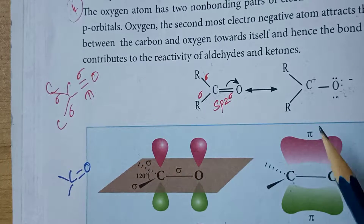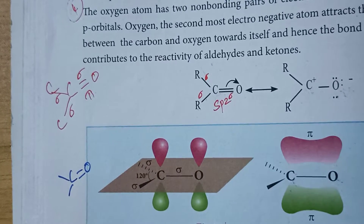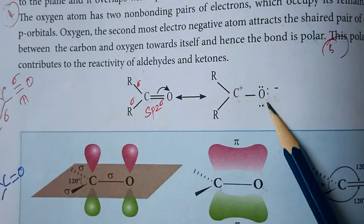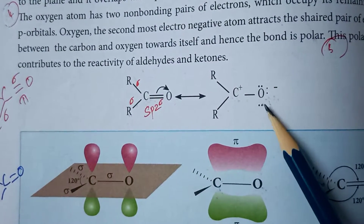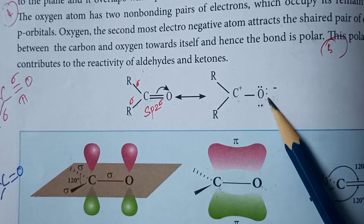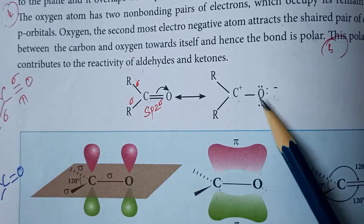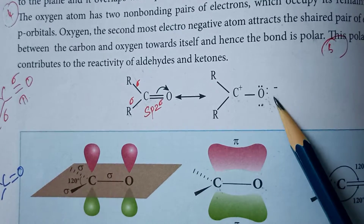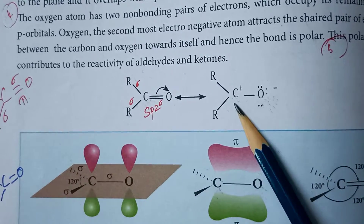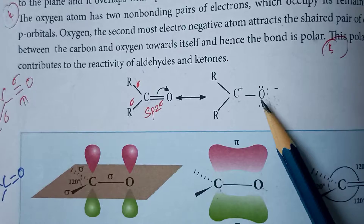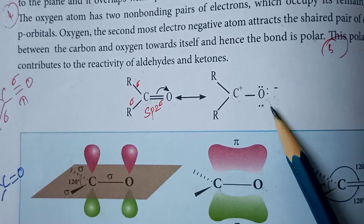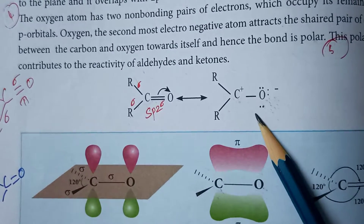Next, the non-bonded electrons present in the oxygen atom of the carbonyl group play an important role. The oxygen atom, being the second most electronegative atom, pulls the electrons towards itself, making the carbon electron-deficient. This creates polarity in the carbonyl group, and this polarization is responsible for the reactivity of aldehydes and ketones.